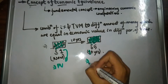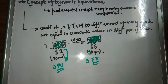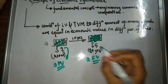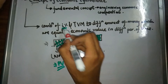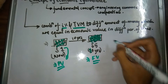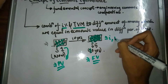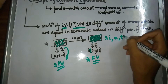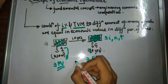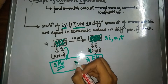With one dollar now you can buy the same packet of biscuit, and in 10 years you will buy the same packet for five dollars. So one dollar and five dollars are not equal but they are economically equivalent. This one dollar is our present value and the five dollars is our future value.